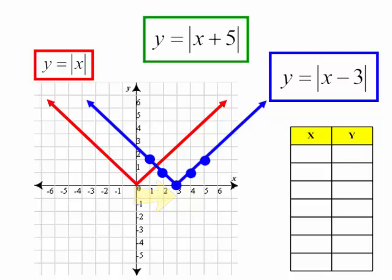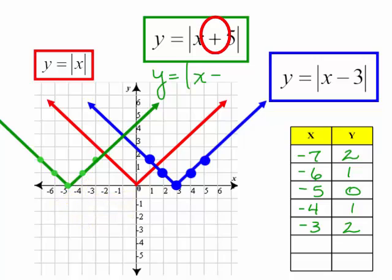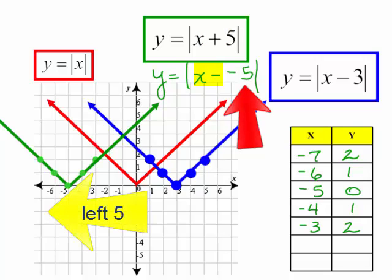Now let's plug in a few points for y equals the absolute value of x plus 5. If I plug in negative 7, I will get y equals the absolute value of negative 7 plus 5, which will be the absolute value of negative 2, which is just 2. I'm going to choose x values, plug them into my function, and solve for y. And now I'm going to plot these points. This is the function y equals the absolute value of x plus 5. Notice this function shifted to the left 5 units. But this could be written as y equals the absolute value of x minus negative 5. Remember, our formula is x minus h. So our h is negative 5, and our graph does shift to the left 5 units.